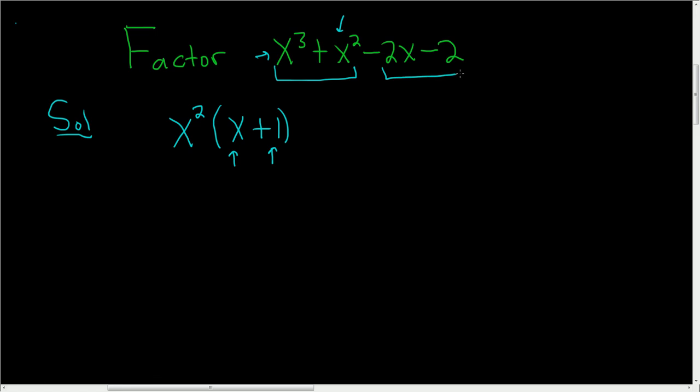Then you look at these two terms. You want to factor out something that's going to leave you with x plus 1. So the obvious choice is negative 2, and that leaves us with x plus 1. So most people are okay up to here. It's the next step that seems to cause a lot of problems.